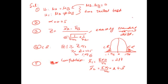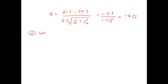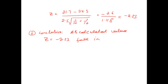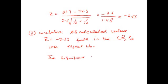Now we check where this value falls. The value minus 2.33 falls in the critical region. The calculated value Z equals minus 2.33 falls in the critical region, so we reject H-naught. We can say that there is a significant difference between the two population means.